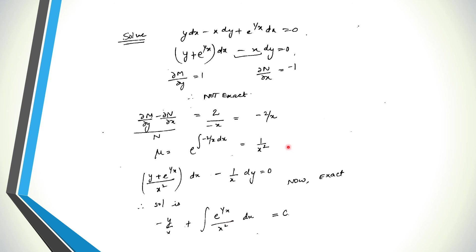If after dividing by N the result is not a function of x alone, and after dividing by M it is not a function of y alone, then we cannot find the integrating factor by this method and must use another approach. Dividing by N must yield a function of x alone, or dividing by M must yield a function of y alone — only then can we find the integrating factor and solve the equation.